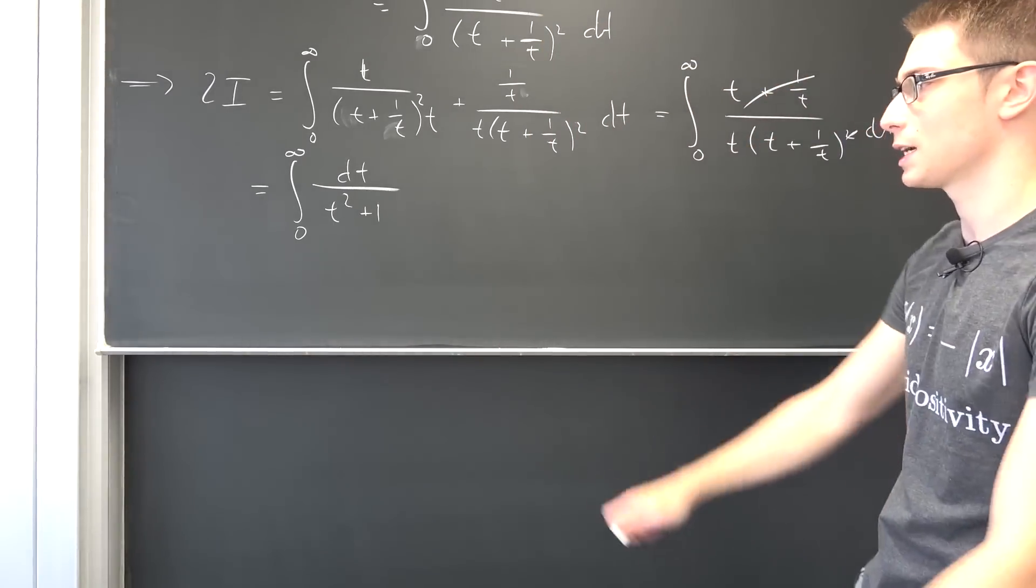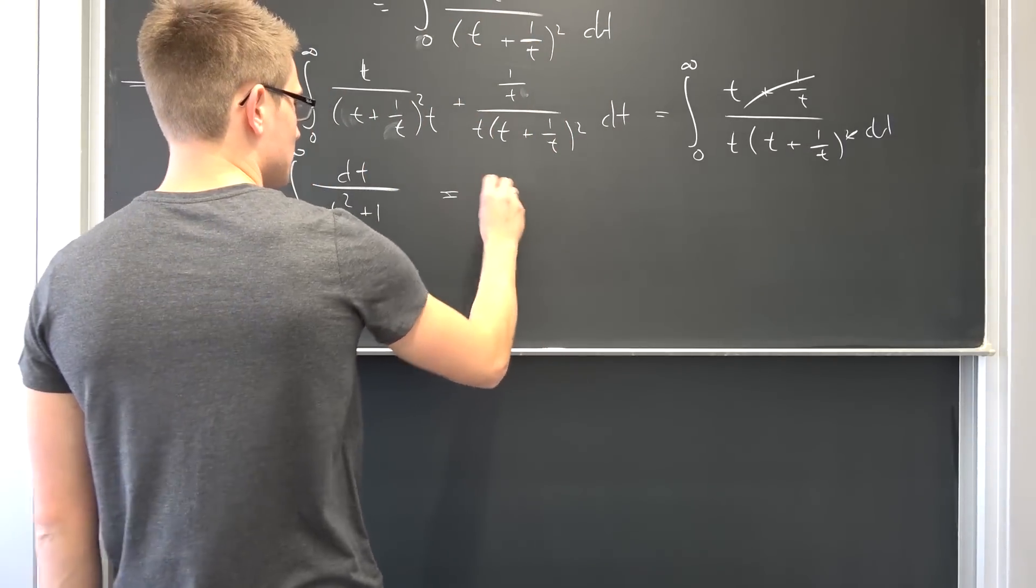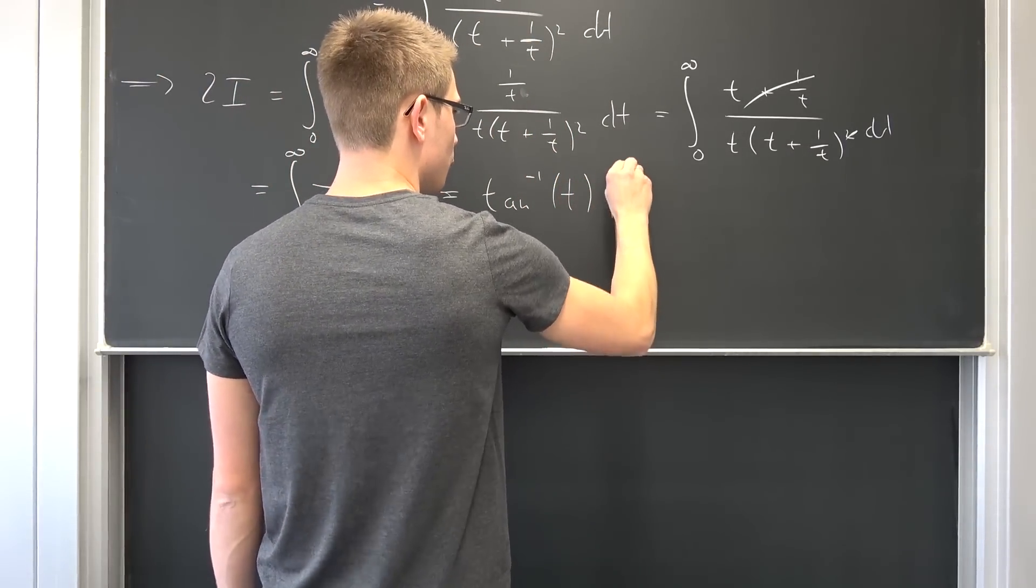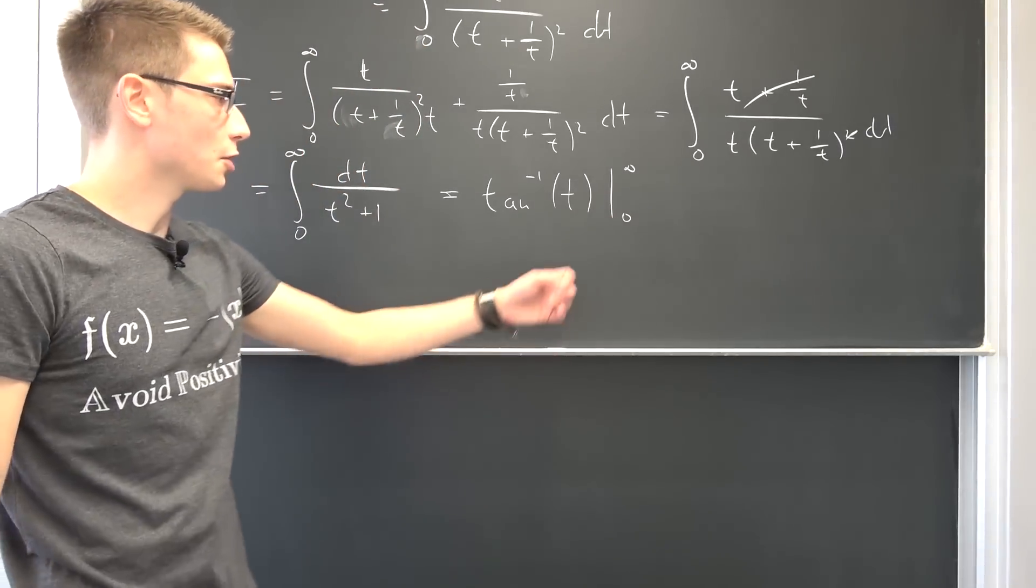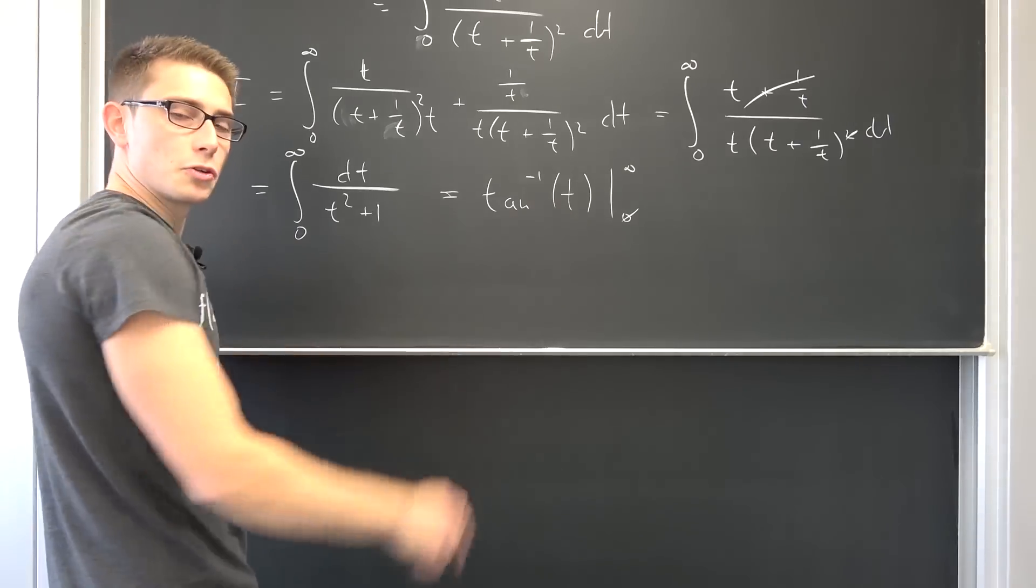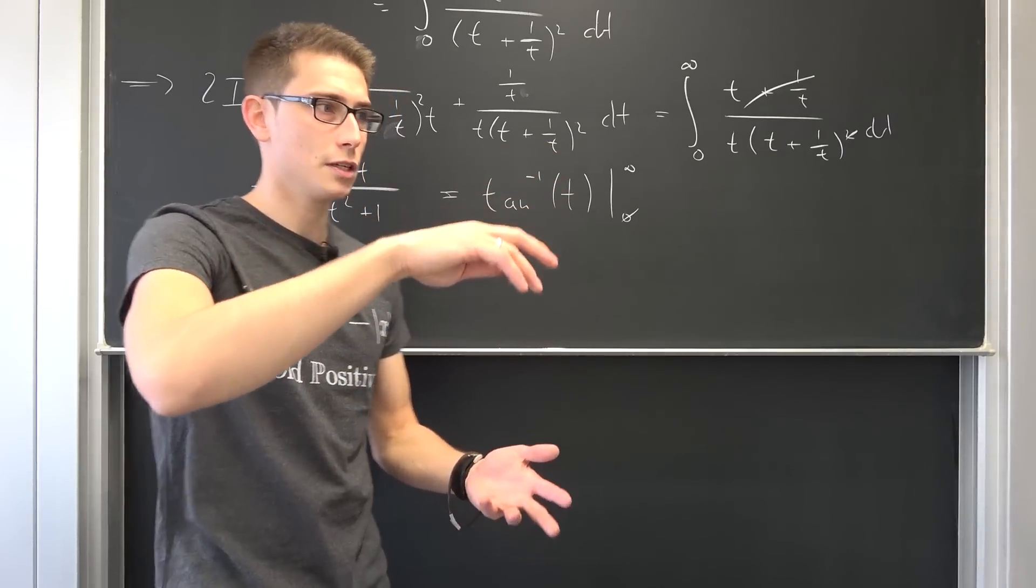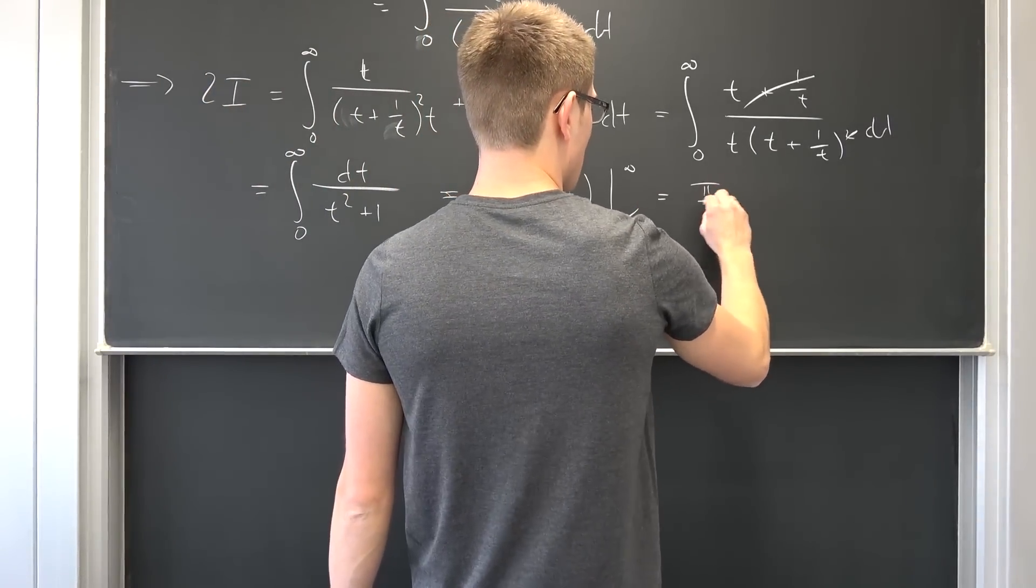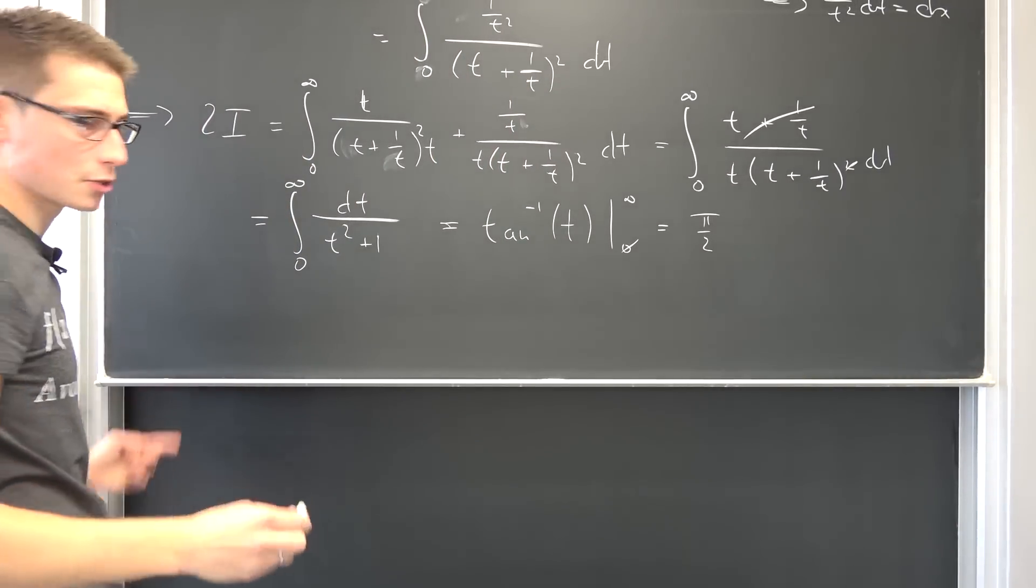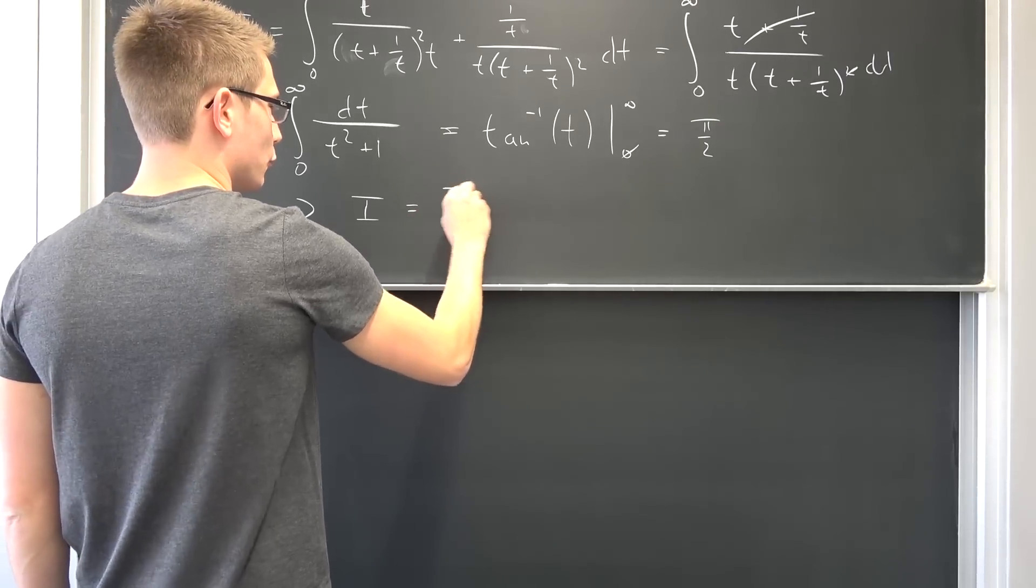This thing right here, I have used it extensively on this channel before. I have derived it several times. This is nothing other than the inverse tangent evaluated from 0 to infinity. So this is arctan(t) from 0 to infinity. When is the tangent going to be equal to 0? Well, at 0, meaning this is going to vanish. If we let t go to infinity, when does our tangent of something explode to infinity? Well, at π over 2. Meaning overall, this is going to give us π over 2. So 2 times i is π over 2, dividing both sides by 2, leaving us with the fact that our integral i is π over 4.